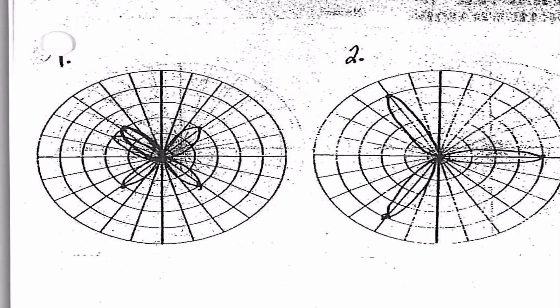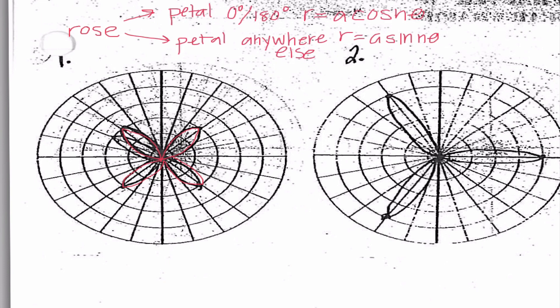We're going to start with number one. The quality of these graphs are not great, so I apologize for that, but looking at this graph — there's my lovely reconstruction — I can definitely tell right away that this is going to be a rose. With a rose, we really need to pay attention to where the first petal is. If our petal is at 0 degrees or 180 degrees, it's going to be a cosine graph: r equals a cosine nθ. If our petal is anywhere else, it's going to be r equals a sine nθ. In number one, I notice the first petal is not at 0 and not at 180, so it falls into the anywhere else category — r equals a sine nθ.